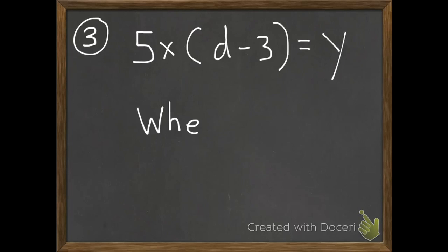Number 3. 5 times parentheses d minus 3 equals y. So when d equals 10, what does y equal?